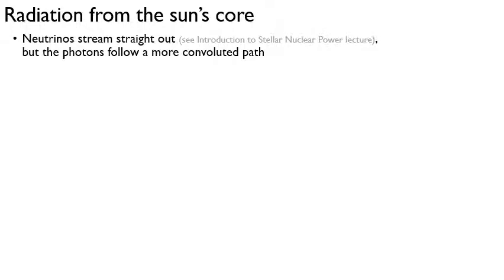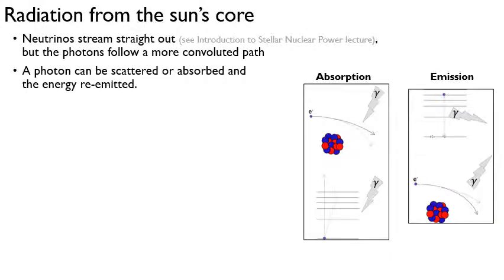Let's talk a little bit more about radiation. In the sun's core, let's say you have nuclear reactions powering the core of the sun, as we talked about in an earlier lecture, and the neutrinos stream straight out. So those come straight to the Earth. But the photons, they don't stream straight out. They undergo lots and lots of interactions. So a given photon, when it's created, it can be scattered, absorbed, or emitted.